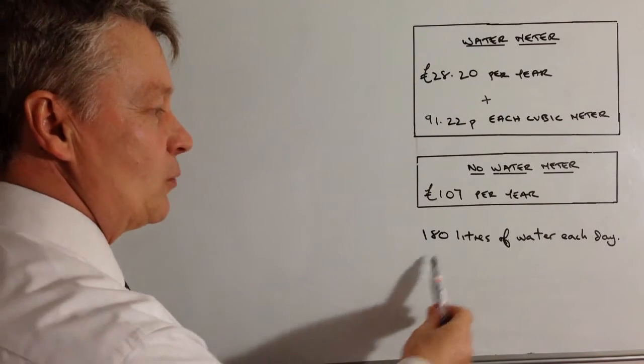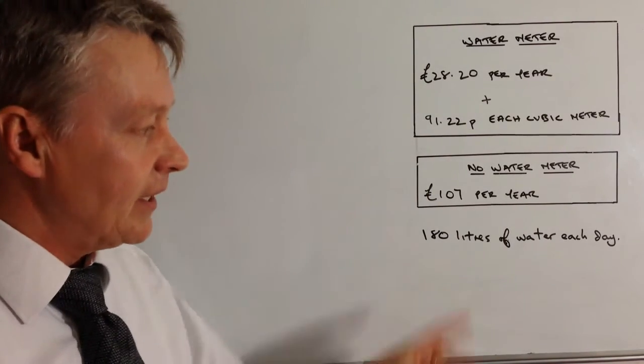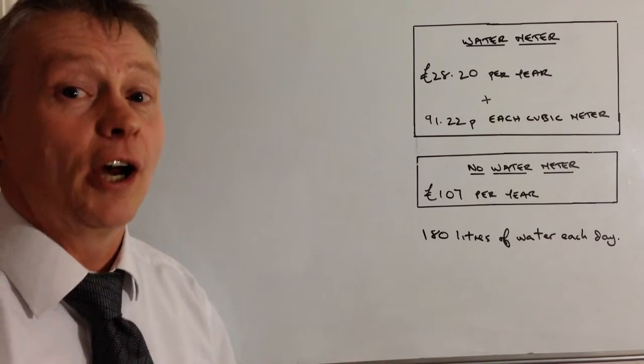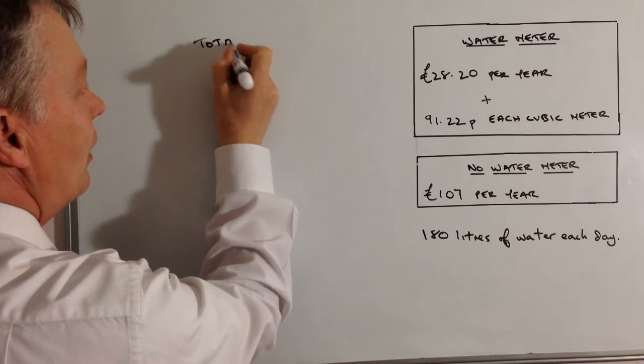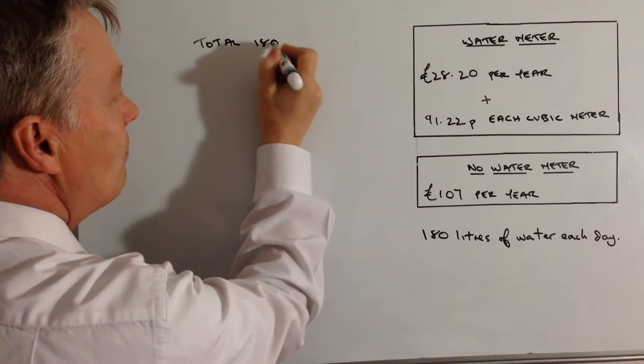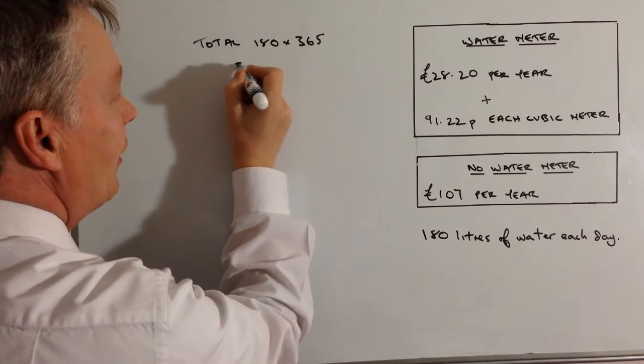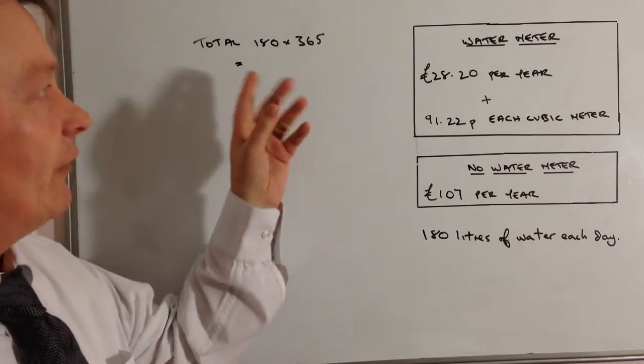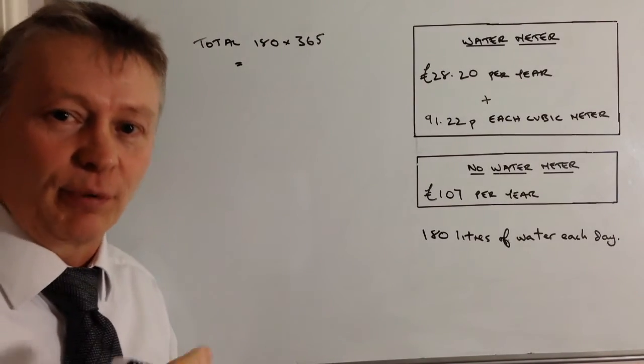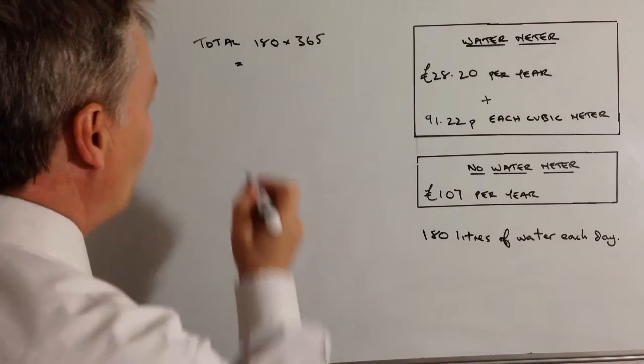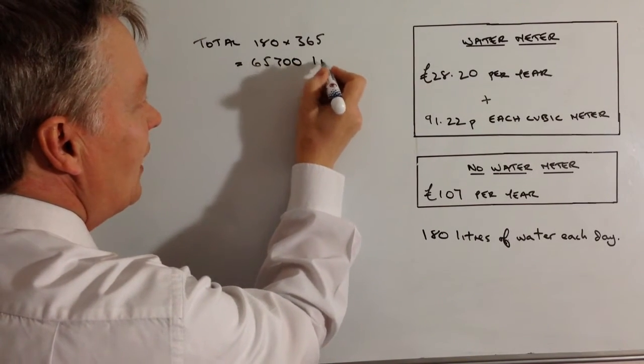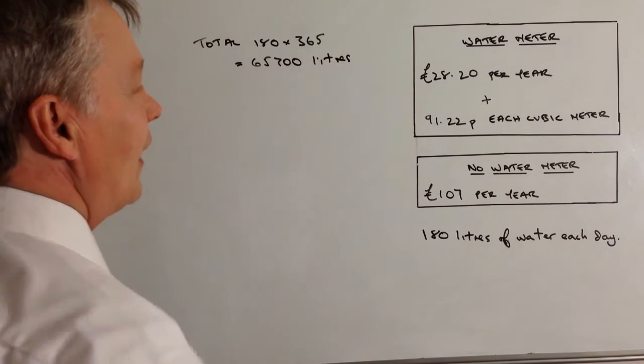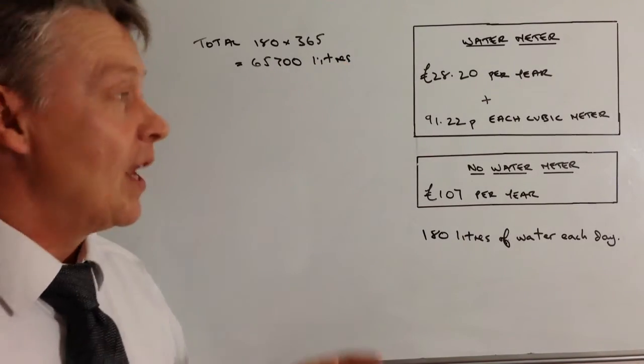So basically what we need to do is work out how many litres of water he's using over a year. So the total is going to be 180 multiplied by 365. Now these are calculator questions so you can plug that into a calculator but that works out as 65,700 litres and that's over a full year.